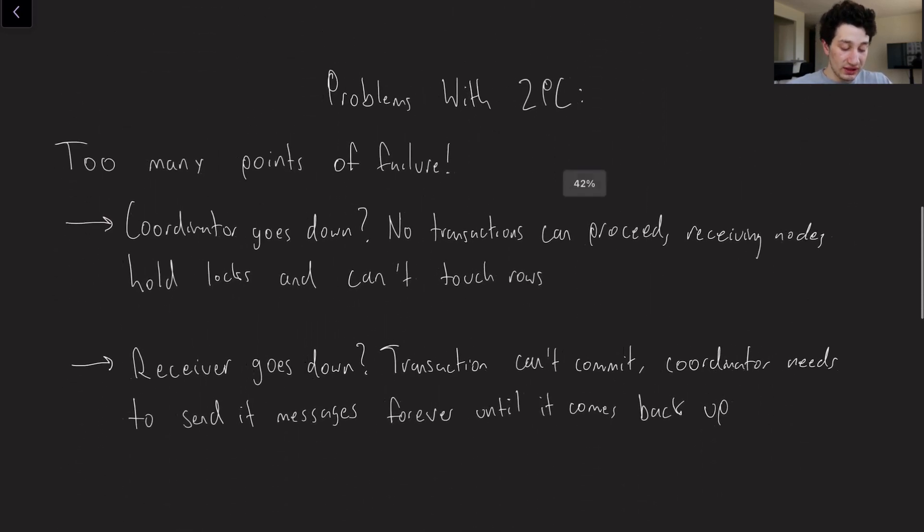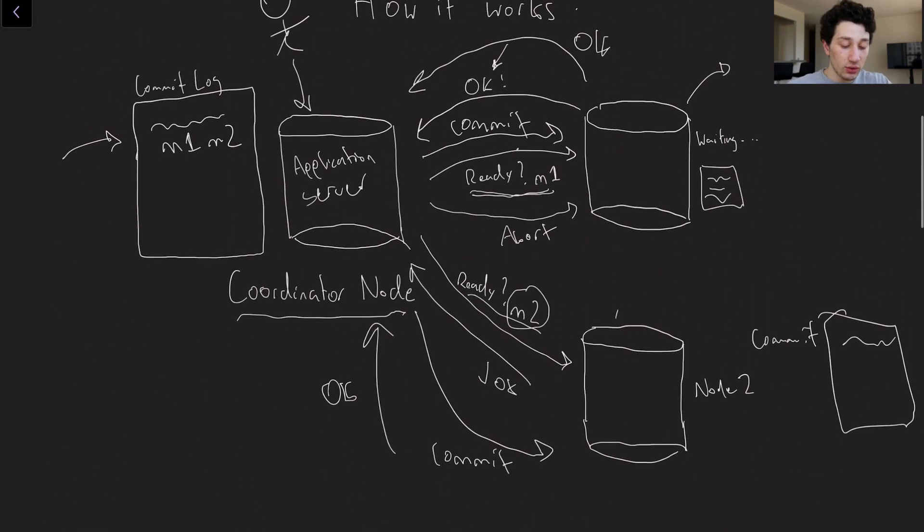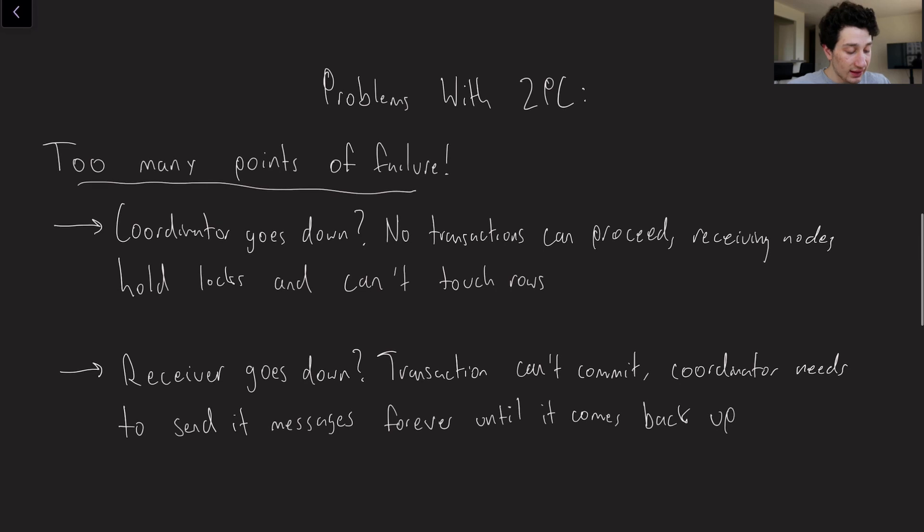So what are some problems that we encounter when we see two phase commit? Well, for starters, there are a lot of points of failure. So the first thing is this, we have a single coordinator node. And if this guy goes down, nothing is getting committed. And if this guy goes down after the commit point, where the commit point is the first time these guys respond to okay, now they're waiting, and they have all of these locks grabbed. And while these locks are grabbed, no other transactions can go through on those same rows. So obviously, that is going to be a problem that no transactions can receive, and that locks are being held. And those rows are basically untouchable during that period of time.